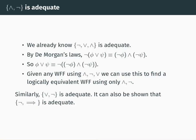We're now going to look briefly at some other examples of adequate sets of connectives. We already know that {not, or, and} is an adequate set. What I'm going to argue now is that you can even throw or out of that set — I'm going to demonstrate why just the set {and, not} is adequate.